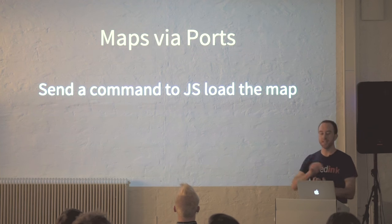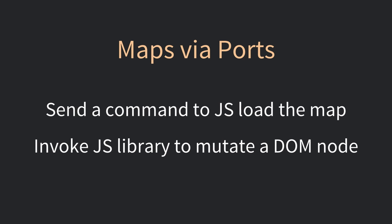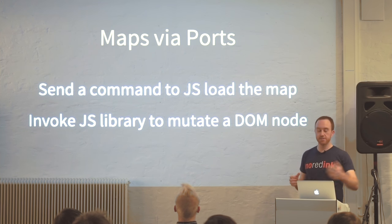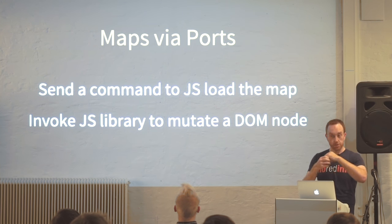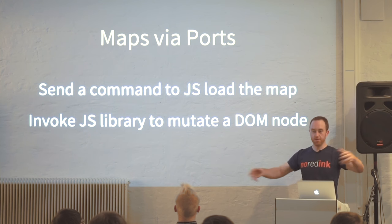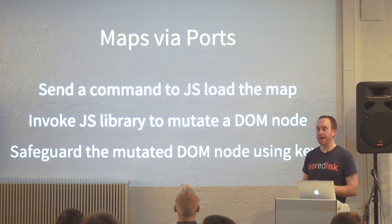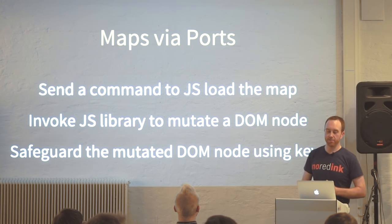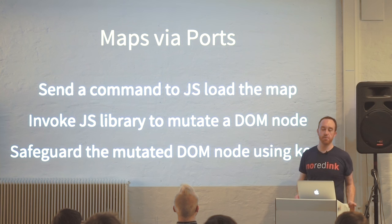Google Maps via ports: first we send a command over to JS saying 'load the map', then invoke some JS library like Google Maps.js to mutate a DOM node. This gets a little tricky because Elm is based around a virtual DOM system — the same thing that React uses. Elm is in charge of the DOM and is going to maintain its state, potentially stomping over DOM nodes in the service of rendering the UI. If we're mutating a DOM node, it might get stomped on later. To safeguard against that, you generally use keys — similar to how you'd use keys in React. This is basically the same category of problem you'd have using a DOM-mutation API in React.